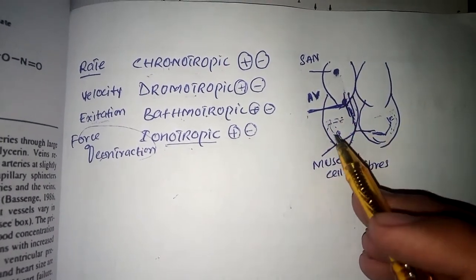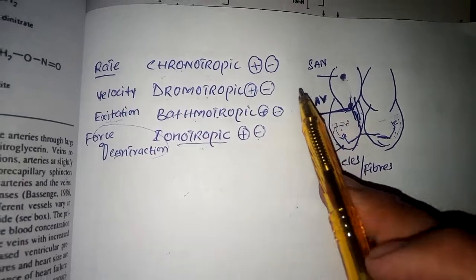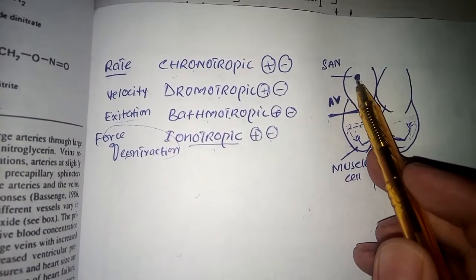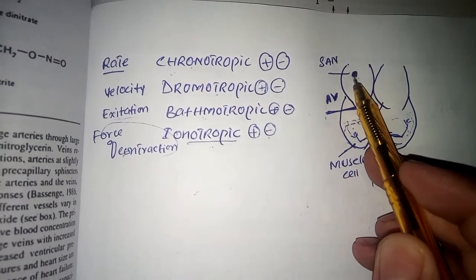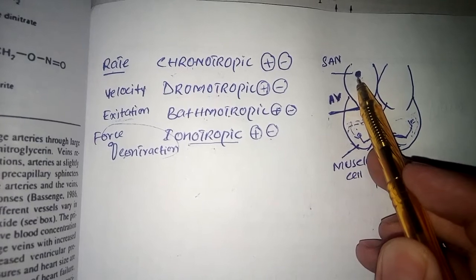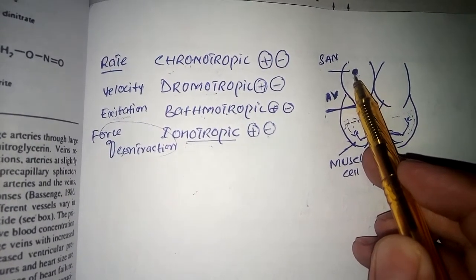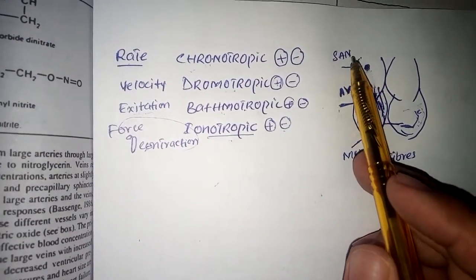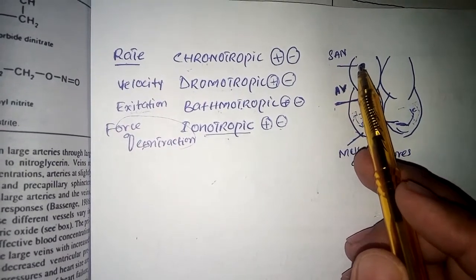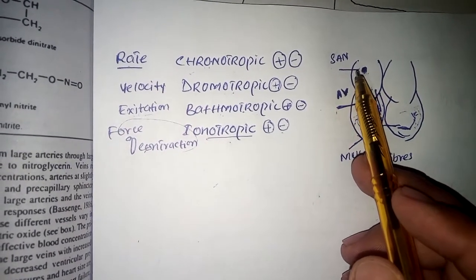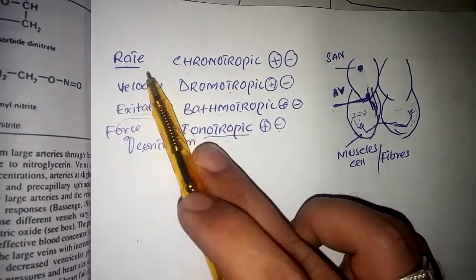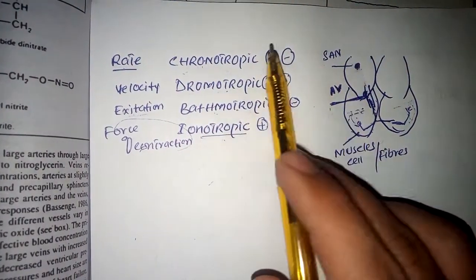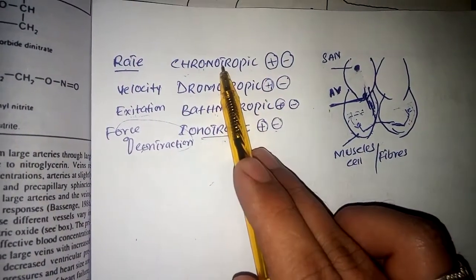Now these terms will be studied physiologically: chronotropic, dromotropic, bathmotropic, and inotropic. If the sinoatrial node fires very quickly or repeatedly, then we say the heart rate is increased, and this is called the chronotropic effect. The sinoatrial node is responsible for increasing and decreasing the heart rate, which we call the chronotropic effect. If the heart rate is increased, we call it a positive chronotropic effect.